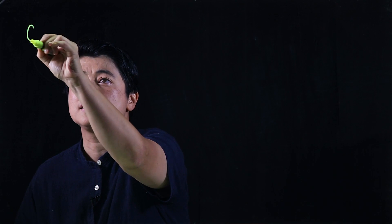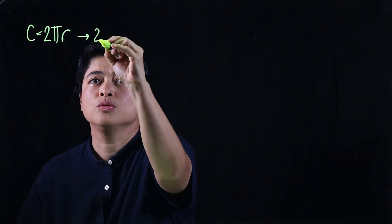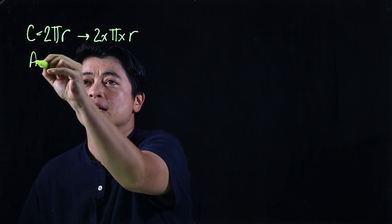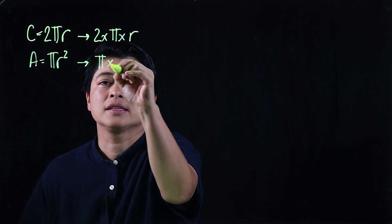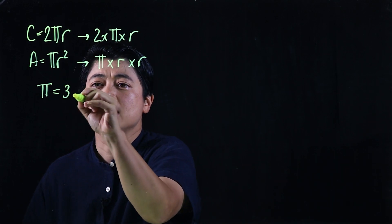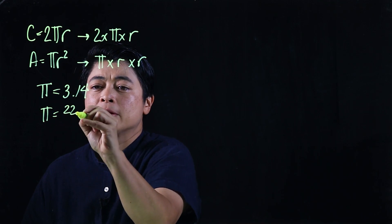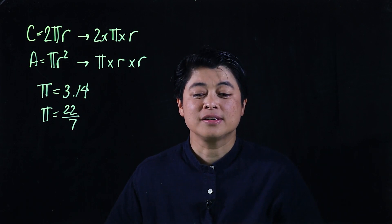We need to recall our formulas for circumference and for area. Circumference is 2πr, or 2 times pi times r. Area is πr², or pi times r times r. Pi could either be 3.14 or 22 over 7.